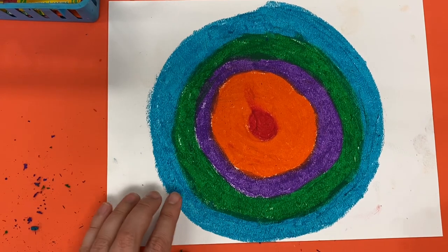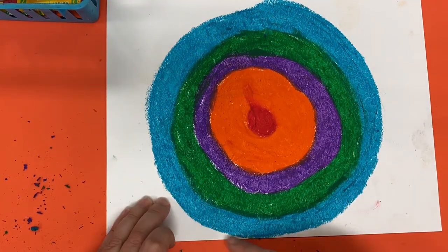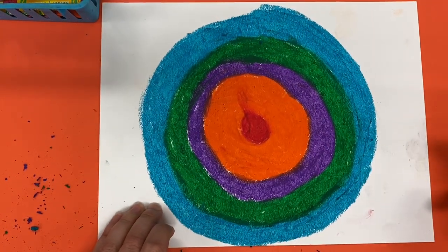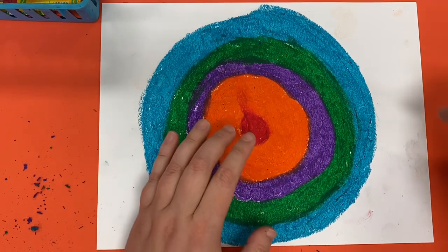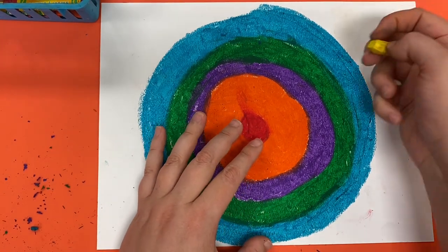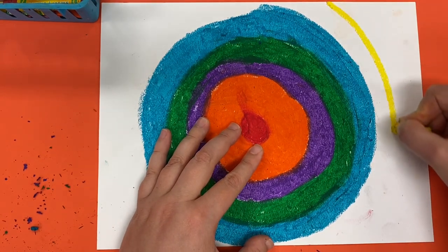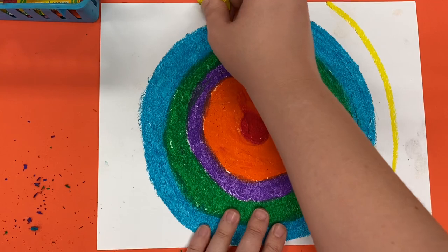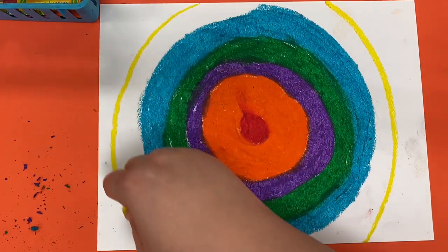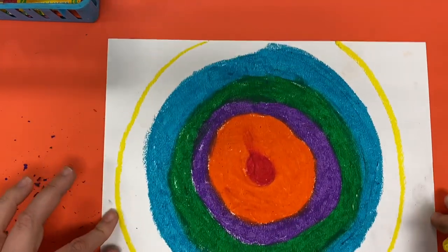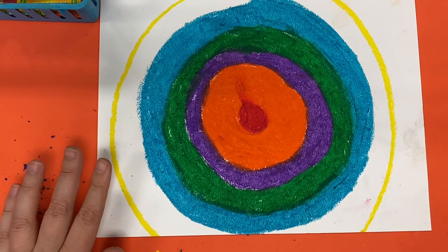Once you draw your biggest circle that you can fit on your paper, you're going to go ahead and start drawing circles that go off the page. So I can't fit another full circle onto my paper, but I can draw a curve like this that looks like a circle. It's just going off the page a little bit.